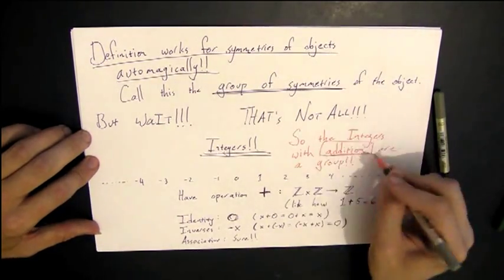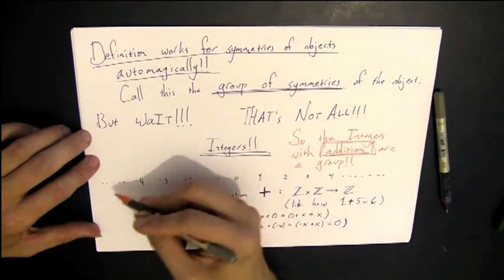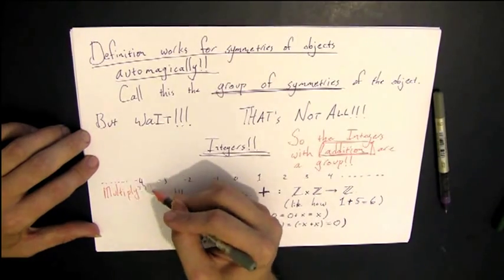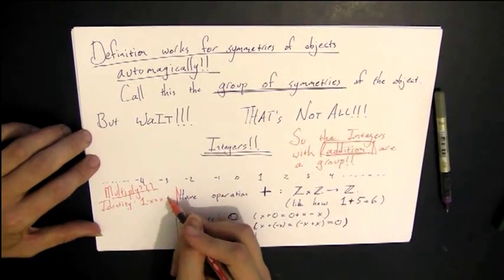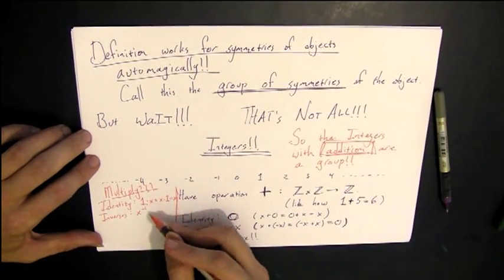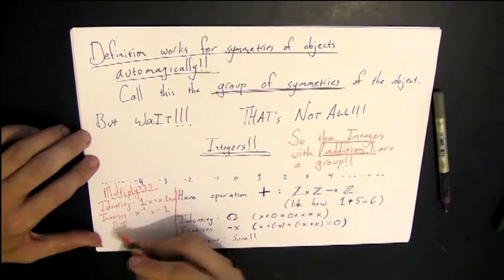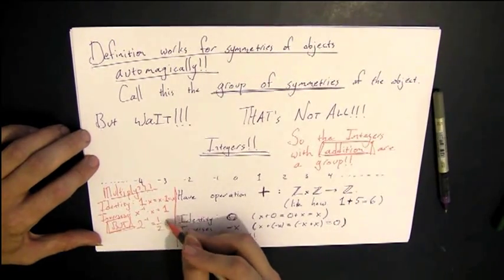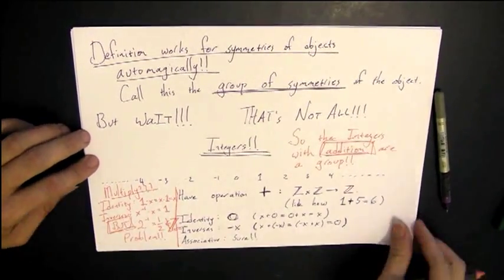In our group definition, we wrote multiplication, but actually the operation doesn't matter. What if we try to multiply integers? There's an identity element, 1, that's fine. But as soon as you think of inverses, if you think of x inverse under multiplication, then you're going to be looking at things like 2 inverse, which is 1 half, which isn't an integer. So that's a problem.